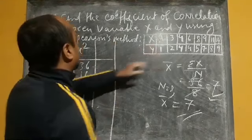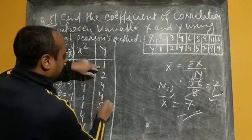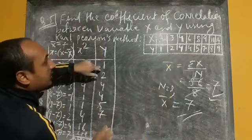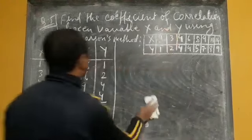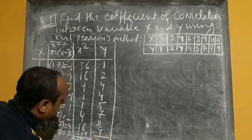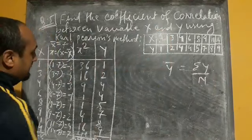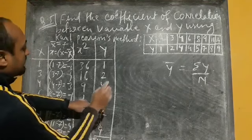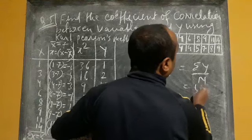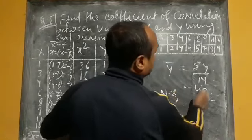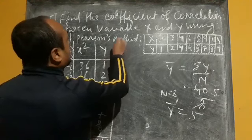Now for variable y: 1, 2, 4, 4, 5, 7, 8, 9. We calculate y-bar equals summation y divided by n. Adding all y values: 1 + 2 + 4 + 4 + 5 + 7 + 8 + 9 = 40. With n = 8, y-bar equals 40 divided by 8, giving y-bar equals 5.